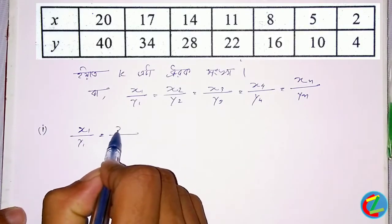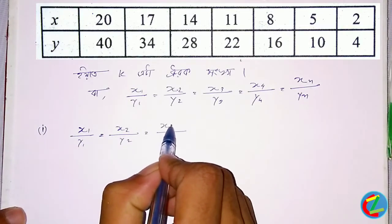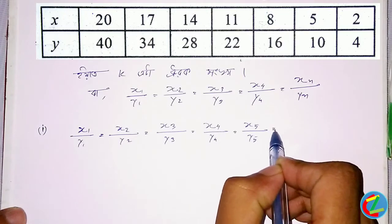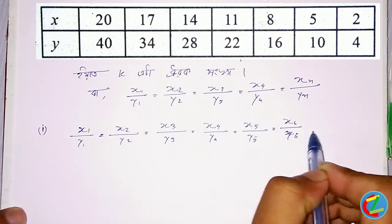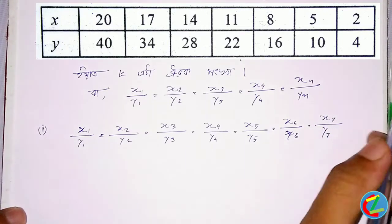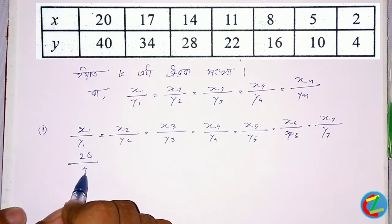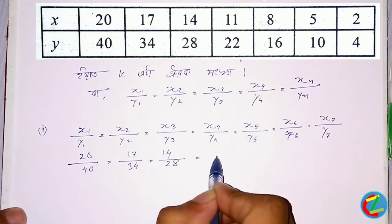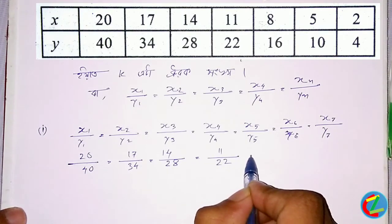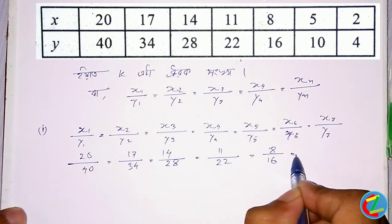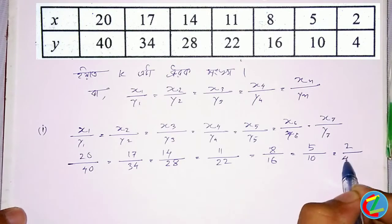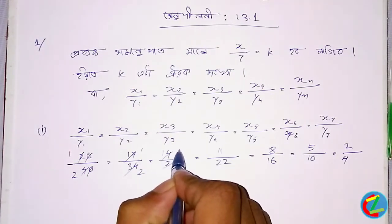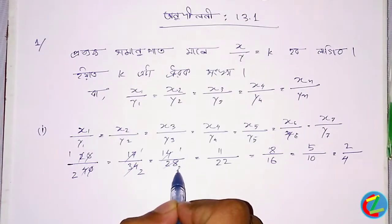Here is an example. For XC 20 or YSA 40, the total of XC 17 YSA 34, the total of XC 14 YSA 28, the total of XC 11 or YSA 22, the total of XC 18 or YSA 16, the total of XC 15 divided by 10 and 75 divided by 2 divided by 4, the total of XC 14.